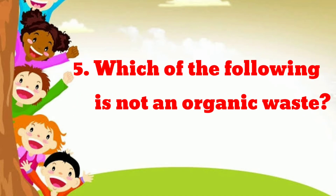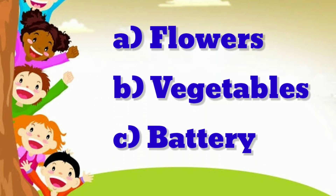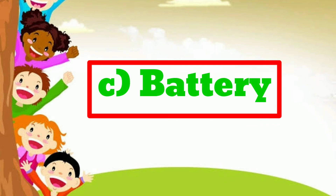Question number 5: which of the following is not an organic waste? Option A, flowers; option B, vegetables; option C, battery. Flowers and vegetables are organic waste. Battery is an electronic waste, so battery is not an organic waste. The answer is option C, battery.